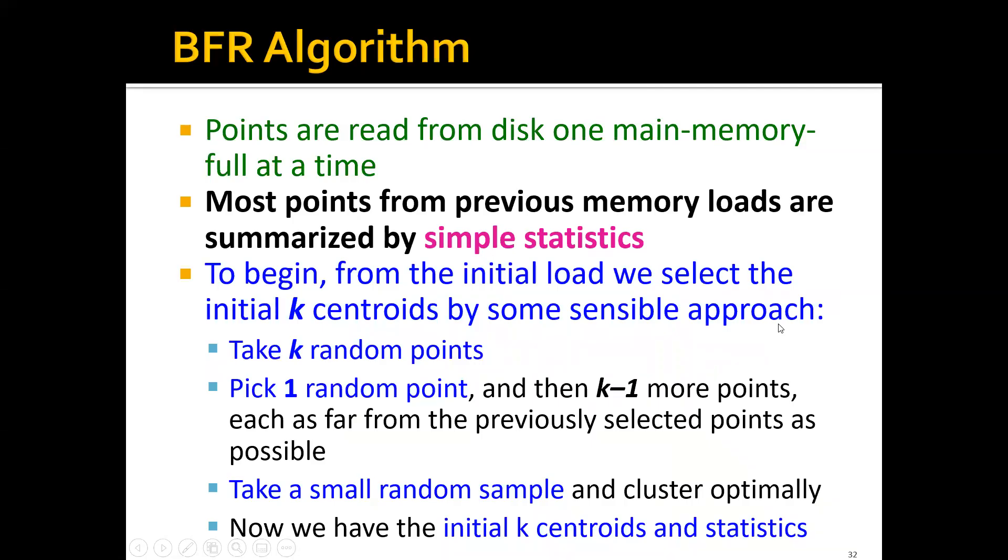To begin, from the initial load, we will select the initial k centroids by some sensible approach. This is like the initialization of the k-means approach. We have several options. For example, we can just randomly pick k points, or pick one random point and then for the k minus one more points, select each point as far away from the previous point as possible. The third option would be to take a really small sample and cluster them optimally using k-means or hierarchical clustering.